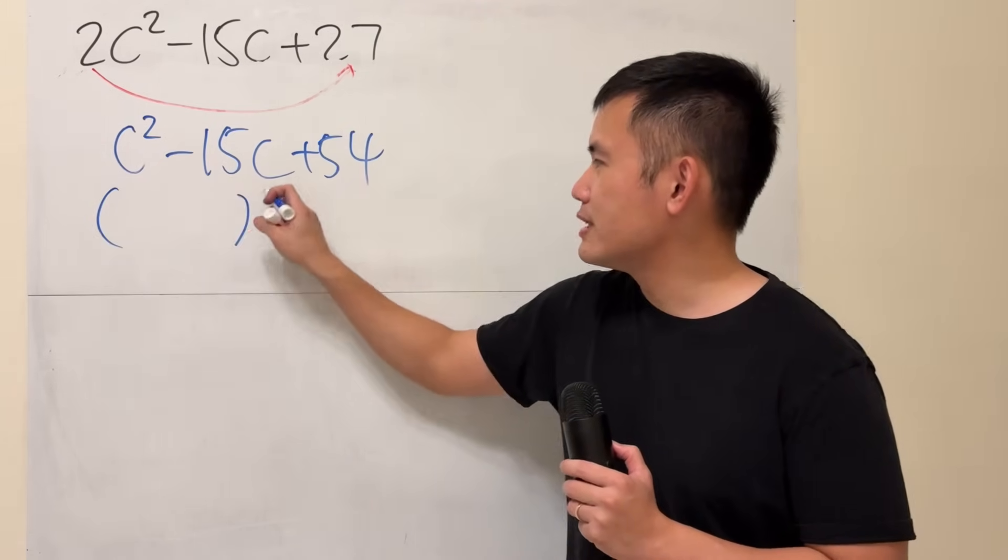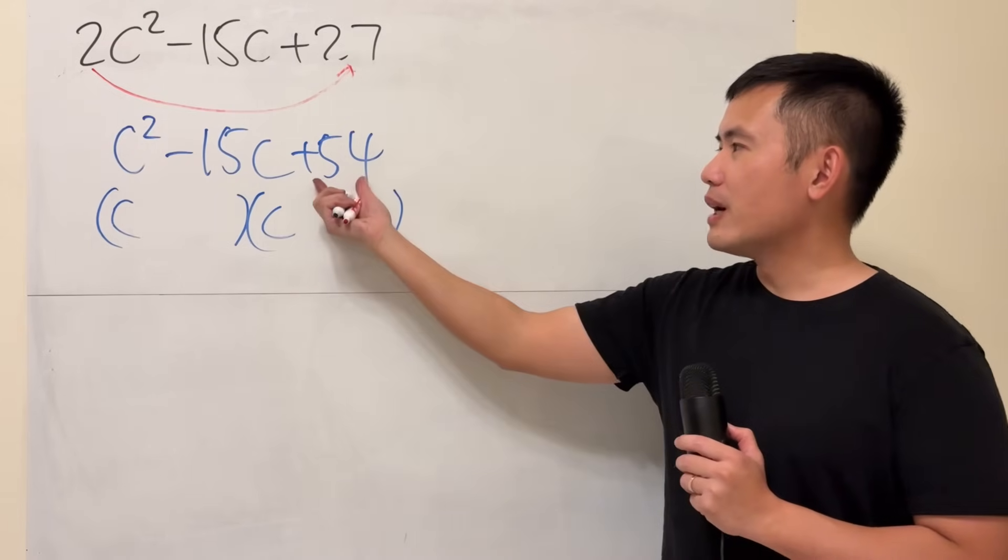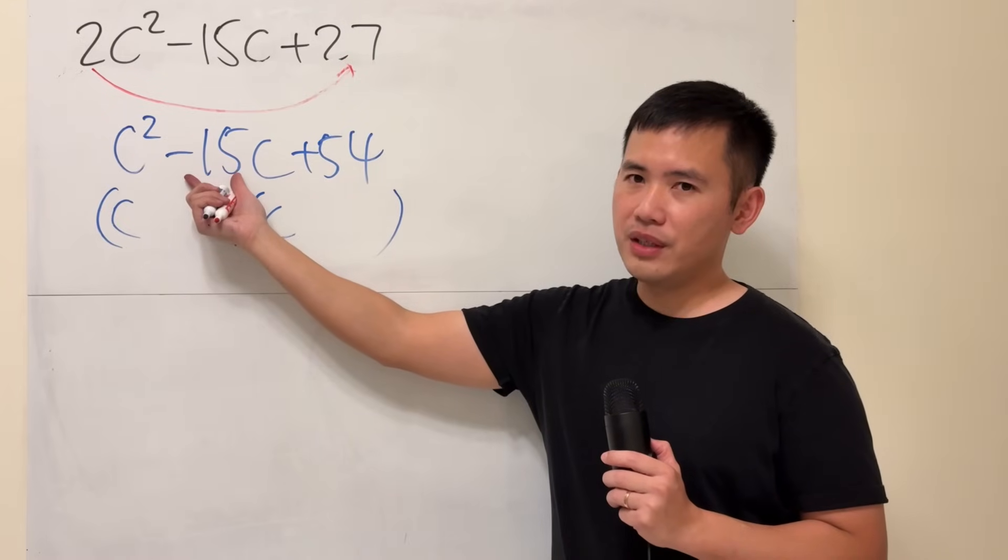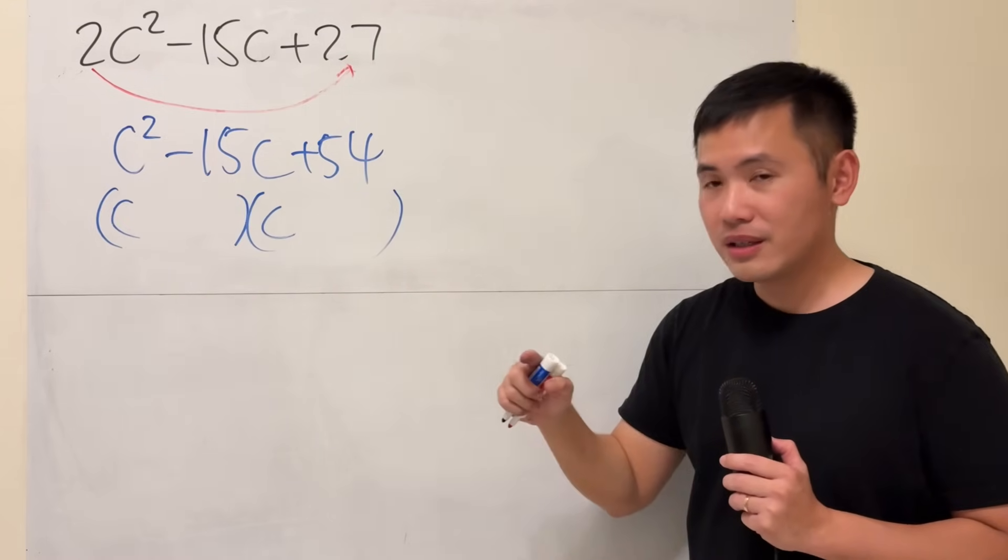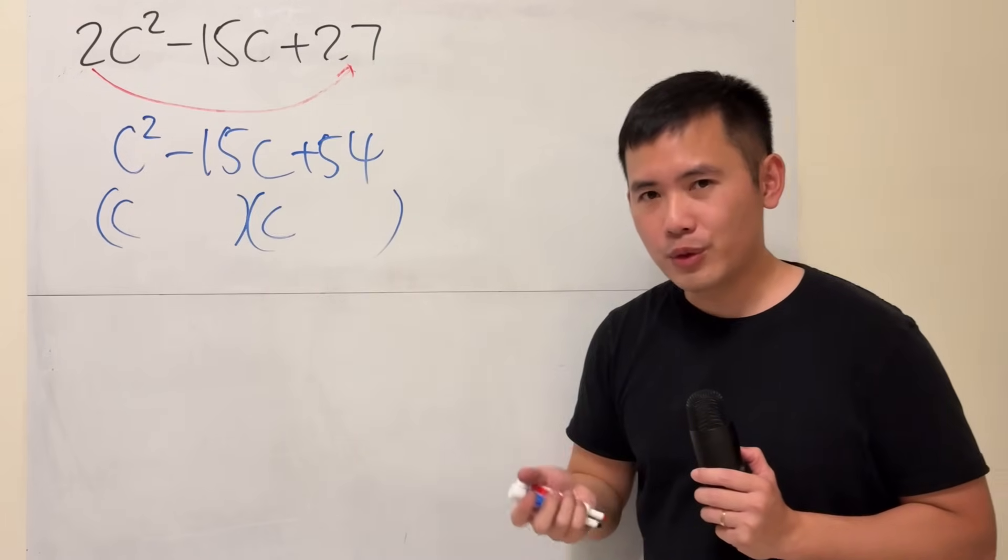We have two sets of parentheses. c and c to give us the c squared, yeah? Now, what times what gives us 54? Together, they add up negative 15. Well, the answer is negative 6 and negative 9.